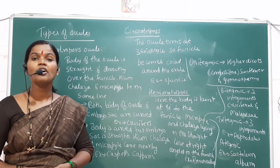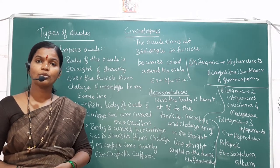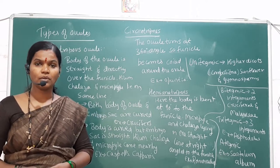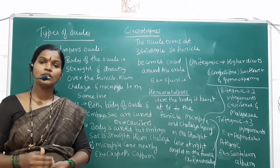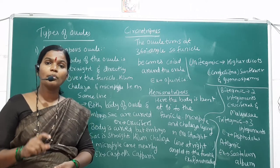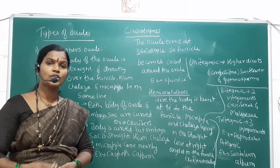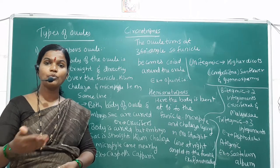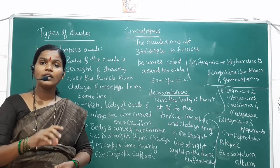The embryo sac is also called the female gametophyte. It consists of the following cells: antipodal cells, also called vegetative cells; and towards the micropyle, the egg apparatus — which is the combination of one egg and two synergids. The synergids are also called helper cells or supporting cells, which make a path for the pollen tube to enter the ovule.